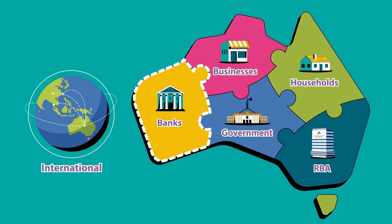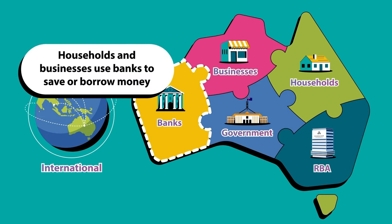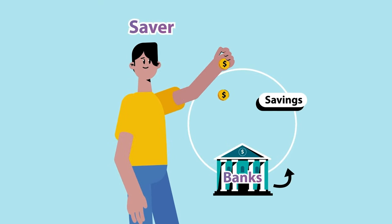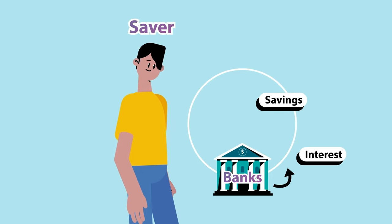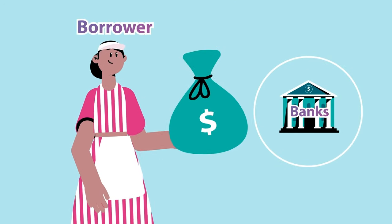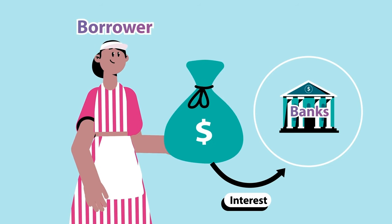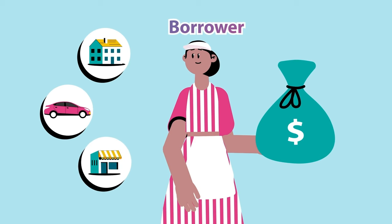And we have banks. Banks are a type of business that deals in money. Households and businesses use banks to save or borrow money. When you save money with a bank, the bank pays you a little bit extra, known as interest. When you borrow money from a bank, they charge you interest, so you have to pay back a bit more than you borrowed. Many people borrow money from a bank for major purchases, like houses or cars, or to build a business.